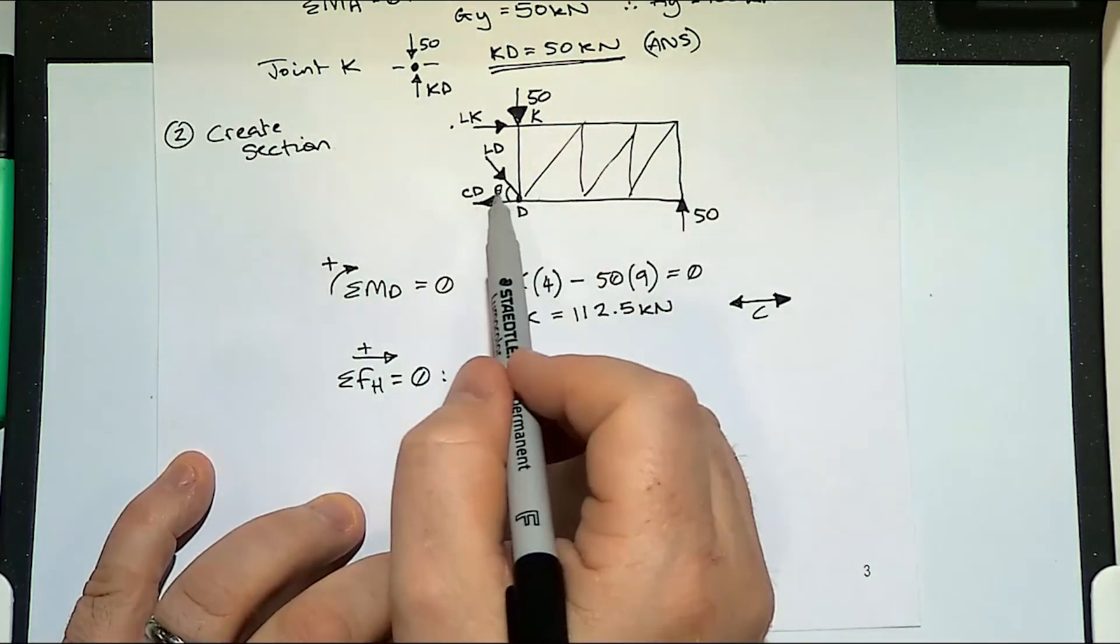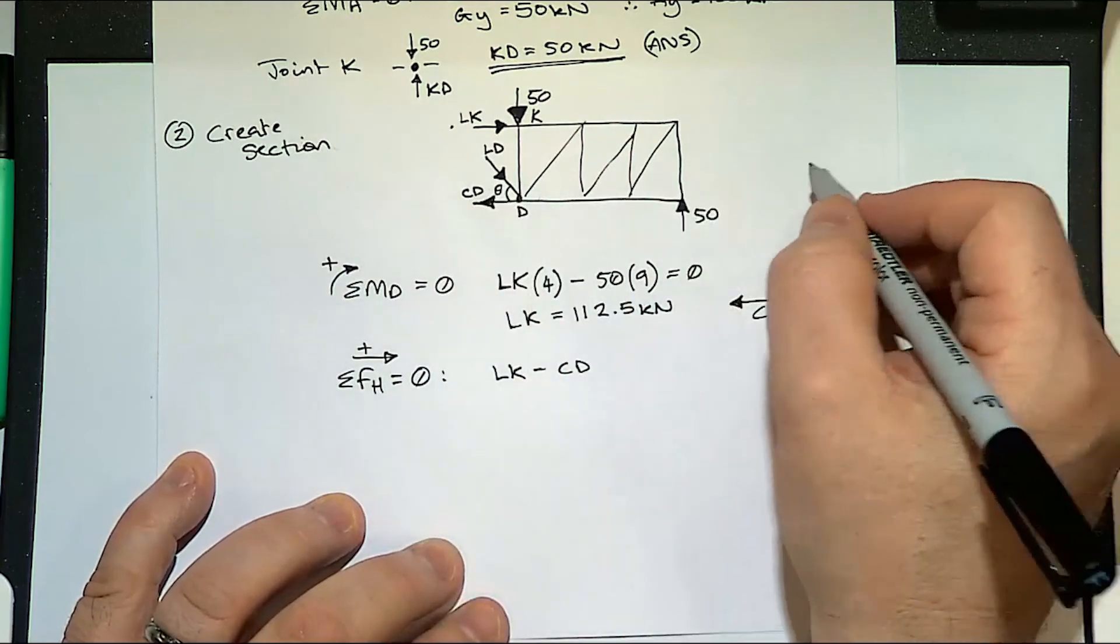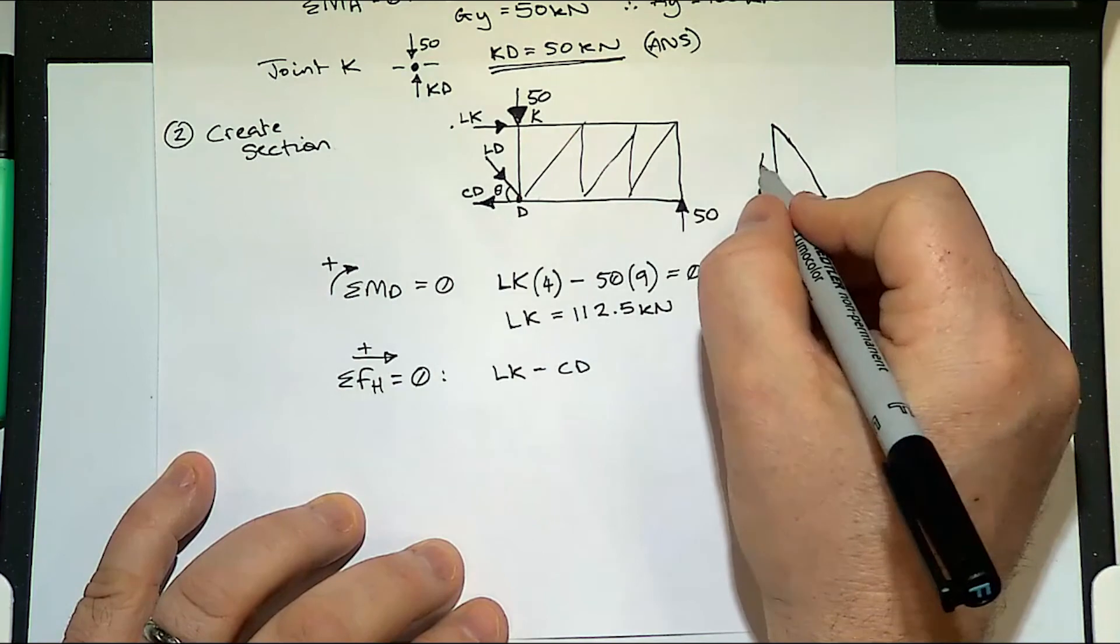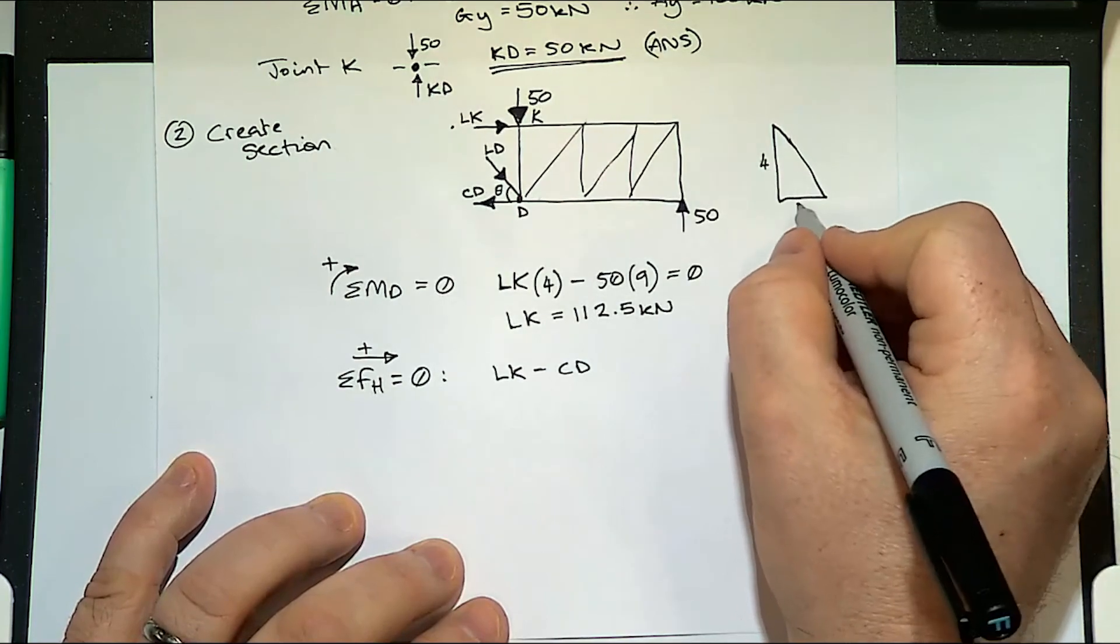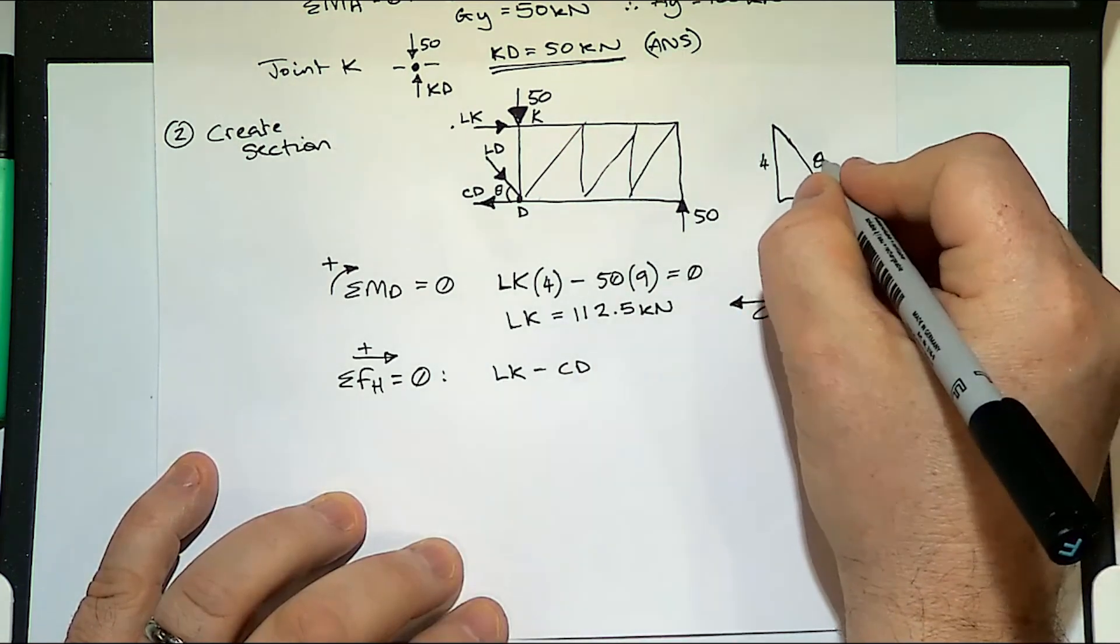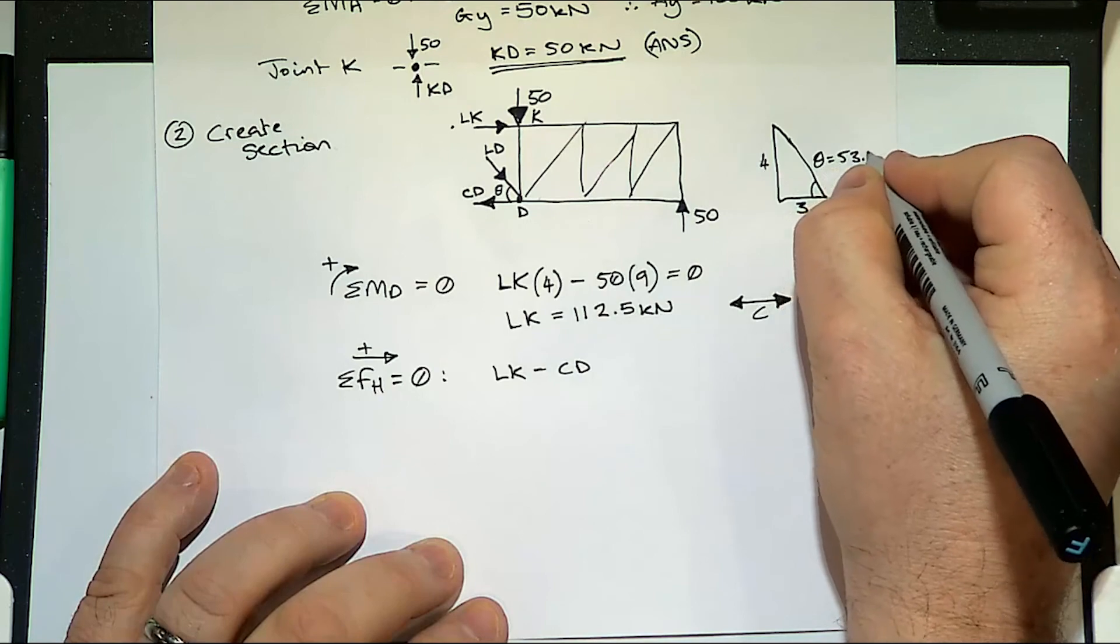If we worked out what the angle theta is, that distance is four and that distance is three. That ends up being that theta is 53.13.